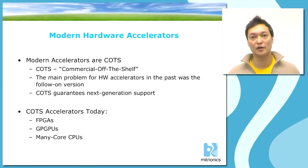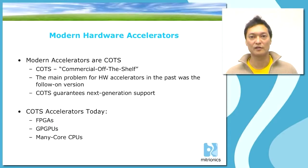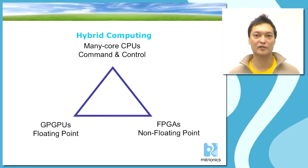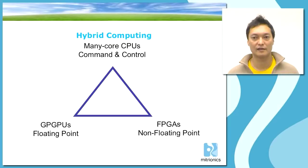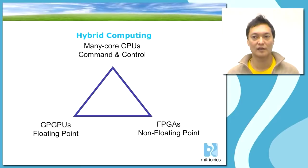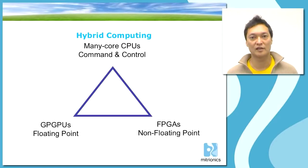Finally, we have many-core CPUs, which is the standard CPU in all computers you buy today. These three kinds of devices — FPGAs, GPUs, and many-core CPUs — form a triangle of heterogeneous computing, also known as hybrid computing. GPGPUs are excellent devices for floating point operations, many-core CPUs are good for command and control type operations, and FPGAs are good for all computations in the non-floating point domain.